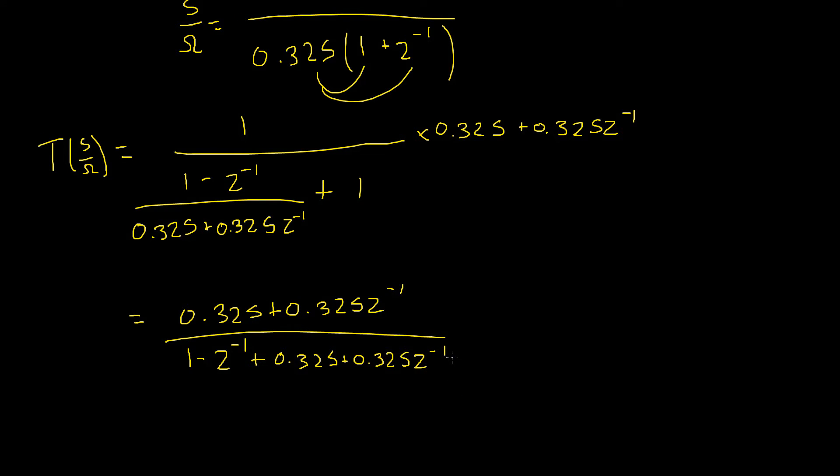So, we can collect our like terms in our denominator. Our numerator will remain unchanged and give us 0.325 plus 0.325 z to the power of negative 1. The 1 and the 0.325 combine to give us 1.325 minus, minus 1z plus 0.325 will give us 0.675 z to the power of negative 1.